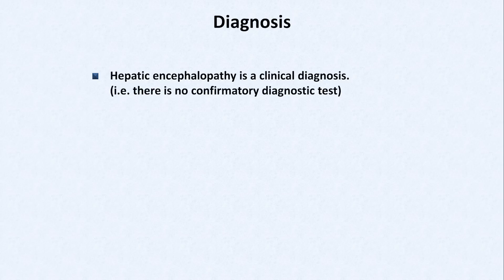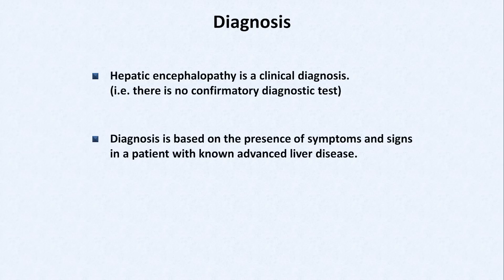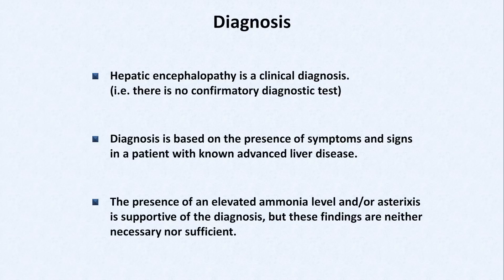How does one diagnose hepatic encephalopathy? It's a clinical diagnosis, which means there is no confirmatory diagnostic test. Instead, diagnosis is based on the presence of consistent symptoms and signs in a patient with known advanced liver disease and in whom other alternative diagnoses have been ruled out. While the presence of an elevated ammonia level and/or asterixis is supportive of the diagnosis, neither of these findings are necessary nor sufficient.